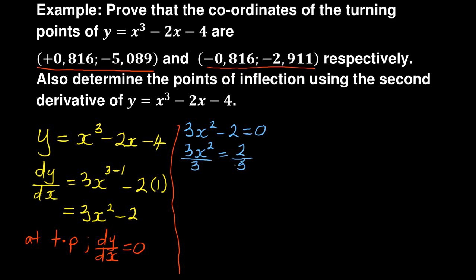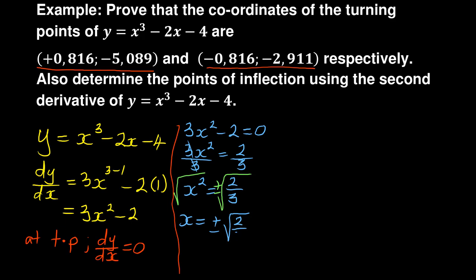From 3x² = 2, you get x² = 2/3. Taking the square root — and the moment you put a square root you must say plus or minus — so x is equal to plus or minus the square root of 2/3.